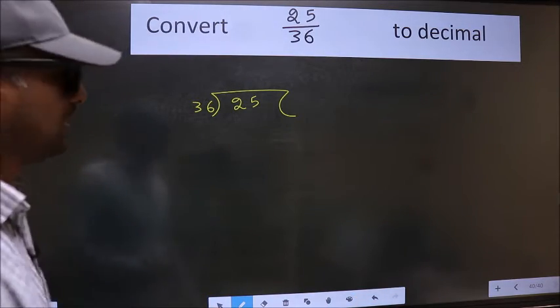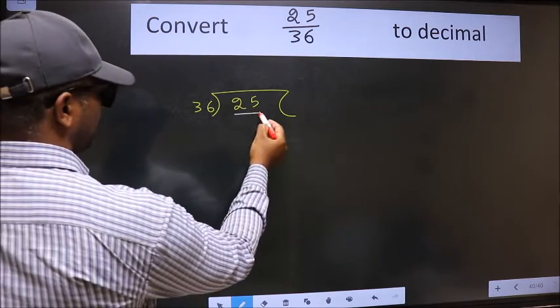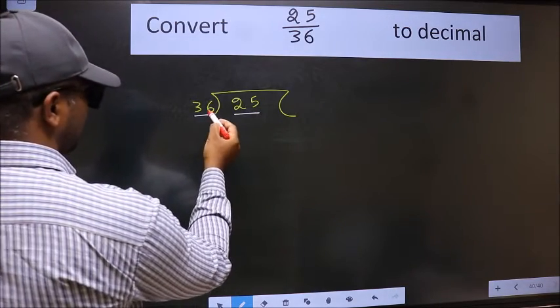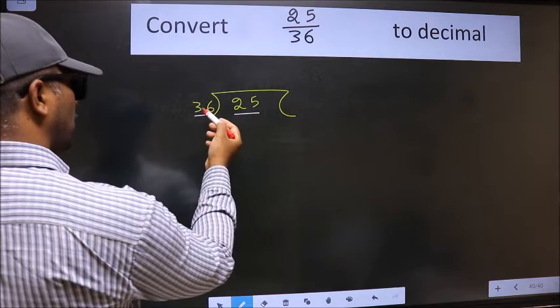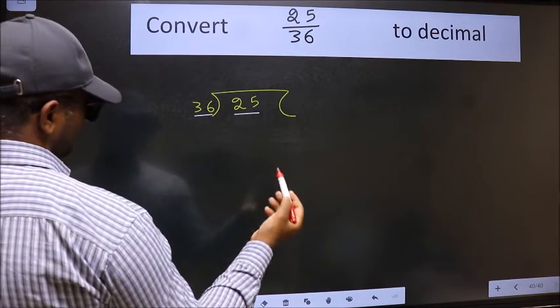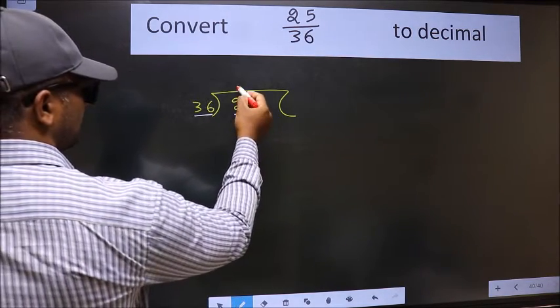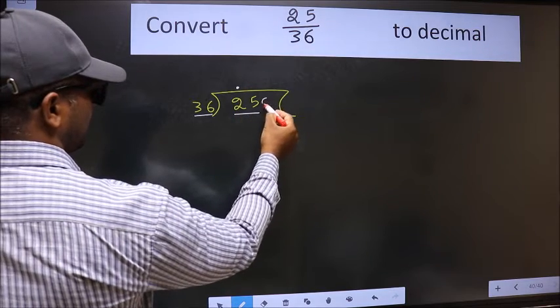Next. Here we have 25 and here 36. 25 is smaller than 36. So what we should do is, we should put dot and take 0.